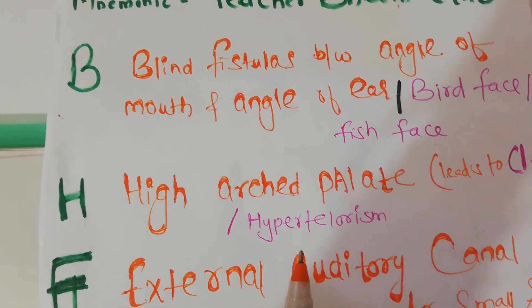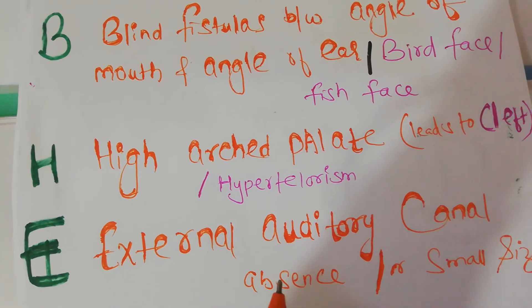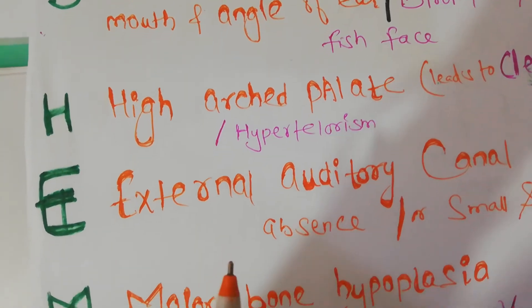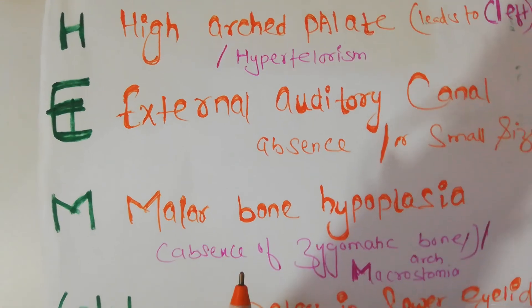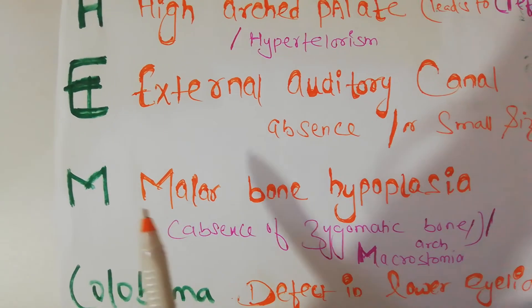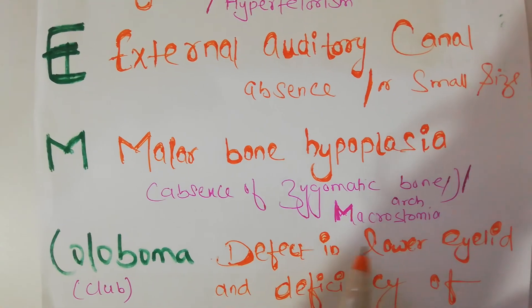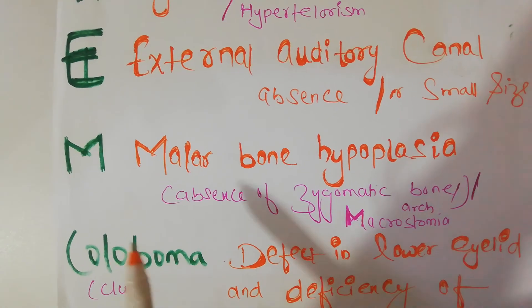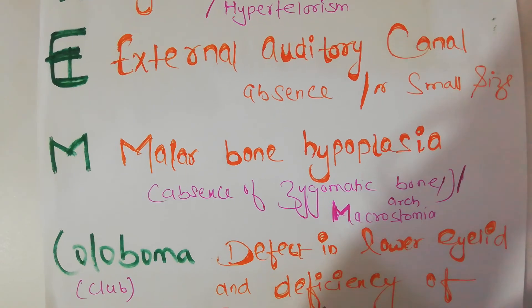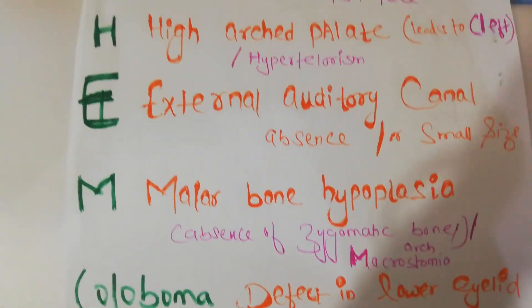E is for external auditory canal — absence or small size. A is for hypertelorism. M is for malar bone hypoplasia — that is absence of the zygomatic bone — and also for macrostomy. C is for coloboma, which as mentioned is a very important feature — a defect in the lower eyelid and deficiency of eyelashes.